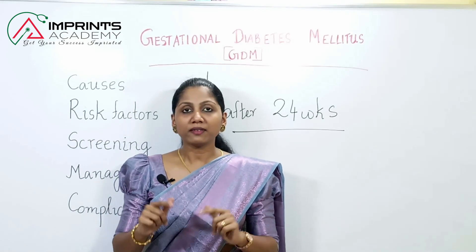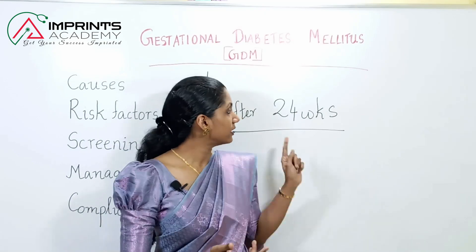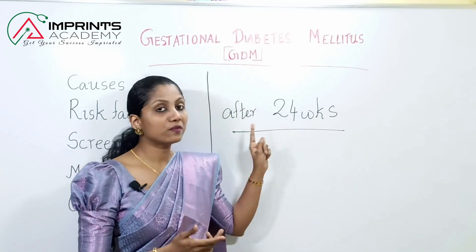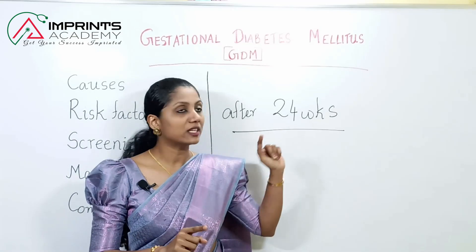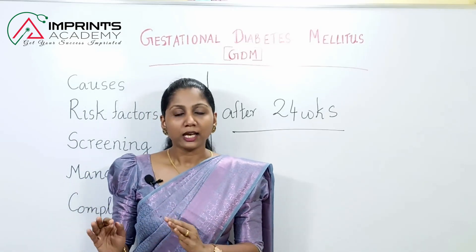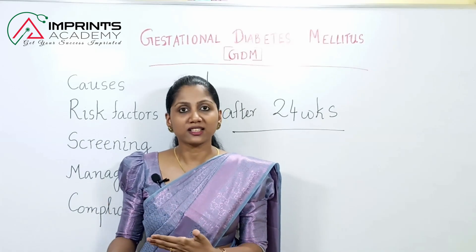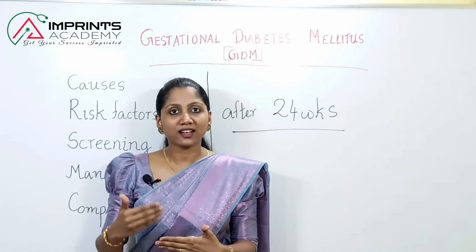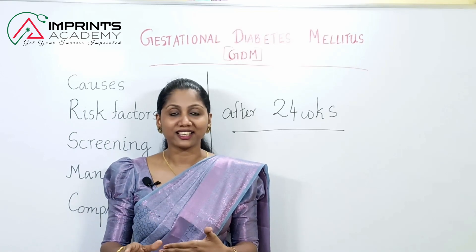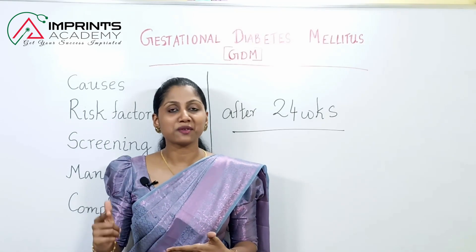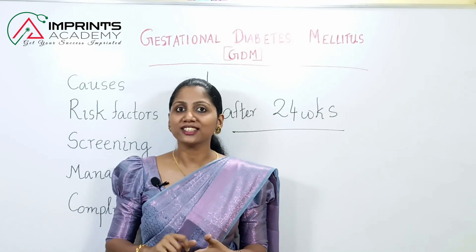The key point is that GDM is developed after 24 weeks of pregnancy. If a pregnant woman is detected with hyperglycemia before 24 weeks, that is not GDM. GDM develops after 24 weeks in pregnancy — that point is noted.